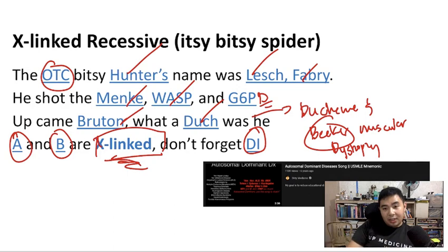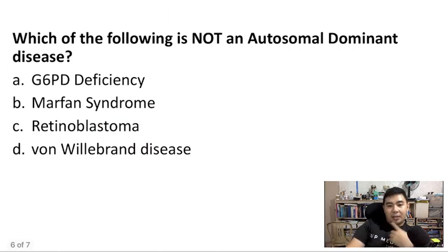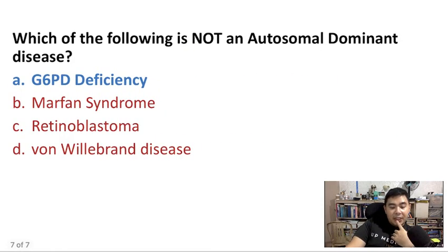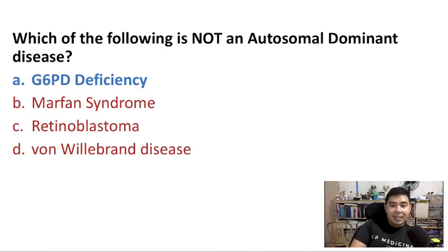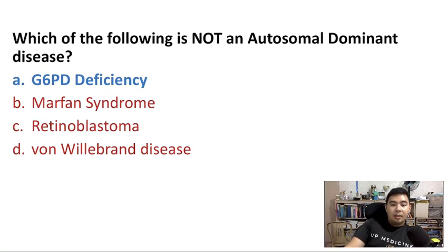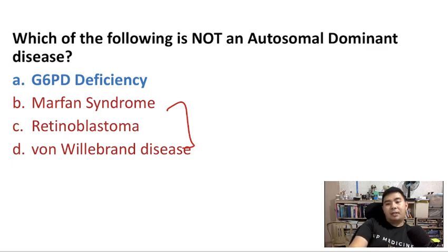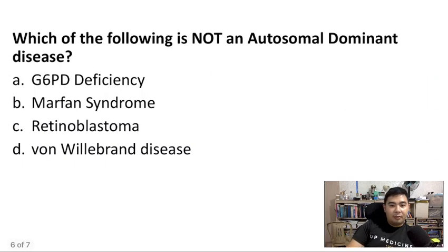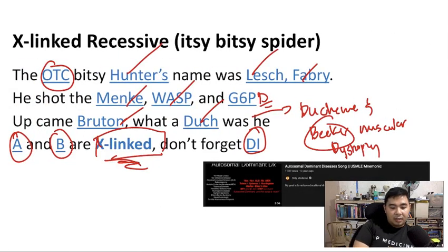Now that we have the songs, we can answer the sample question: Which of the following is not an autosomal dominant disease? G6PD is not autosomal dominant — as we mentioned, G6PD from the song is X-linked recessive. Marfan syndrome, retinoblastoma, and Von Willebrand disease are all autosomal dominant diseases.